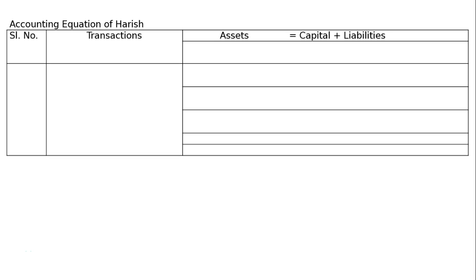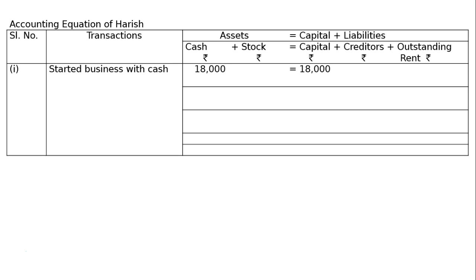This is the next question: what will be the effect of the following transactions on the accounting equation? Harris started business, so we will draw the format — serial number, transactions, and then Assets = Capital + Liabilities — with columns for cash, stock, capital, creditors, and outstanding rent, along with rupee symbols.